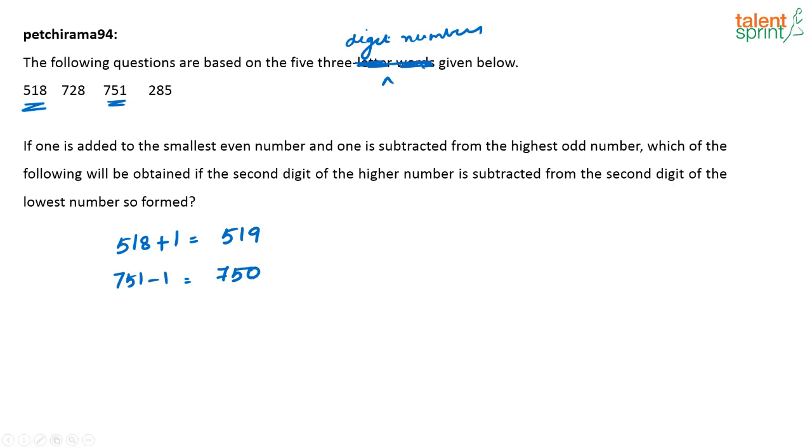Which of the following will be obtained if the second digit of the higher number is subtracted from the second digit of the lower number so formed? Second digit of the higher number and second digit of the lower number. So I just have to do 5 minus 1, which is equal to 4. Based on what is given here, this is the answer that you will get.